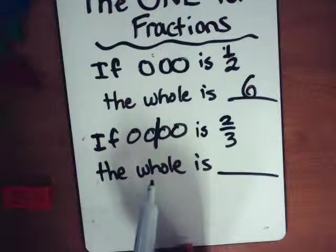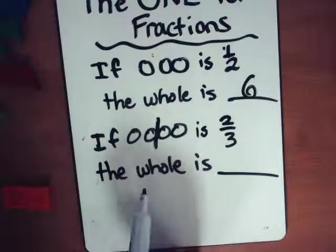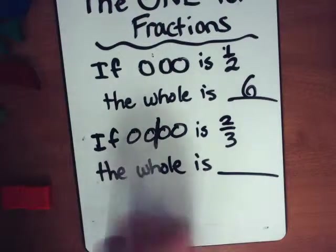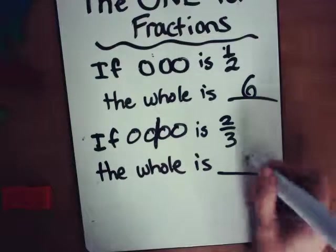So if we've got two-thirds, each third is two, how many more thirds do we need? One more third for the whole, right? And each third is two, so what's our total number? Six for a whole on that one, too.